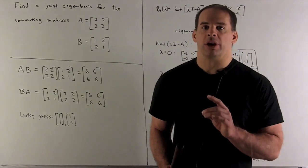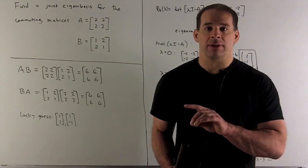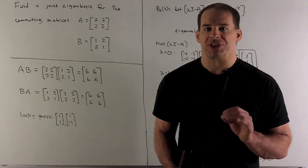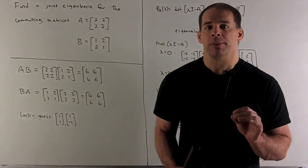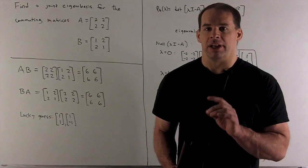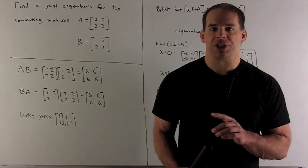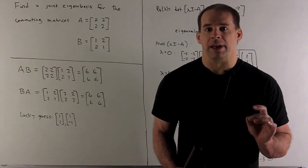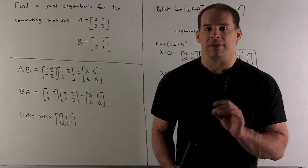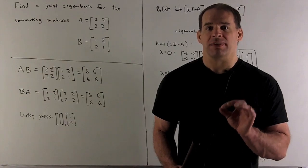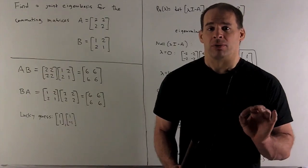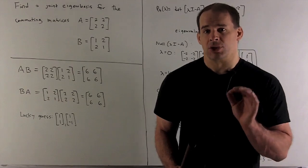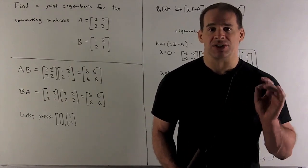The theorem we're going to use says: if we have a set of matrices of any size, where each matrix is diagonalizable, and if each matrix commutes with the other matrices, then we have a joint eigenbasis. That means we have a basis where each vector is an eigenvector for all the matrices at the same time.